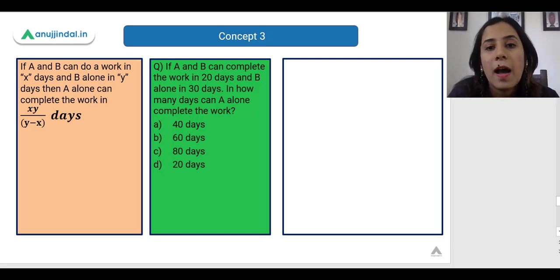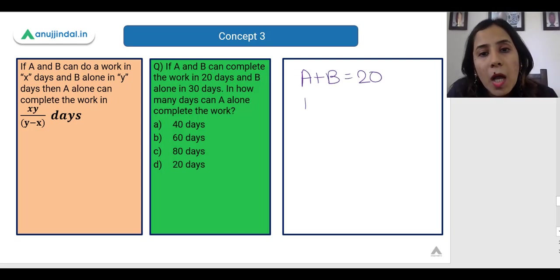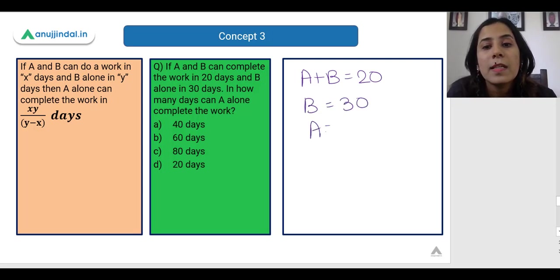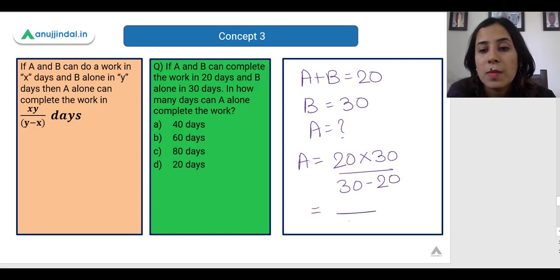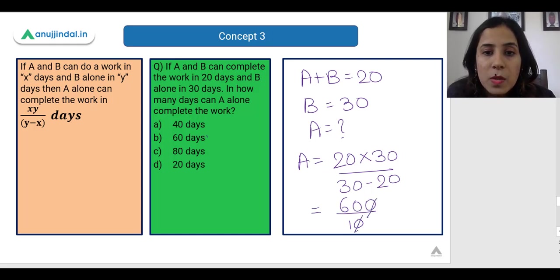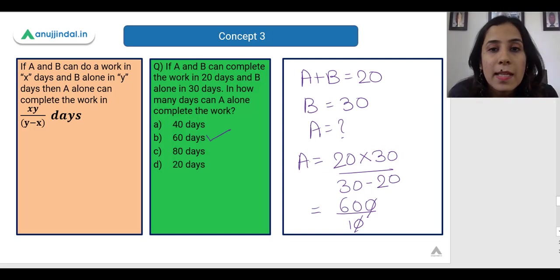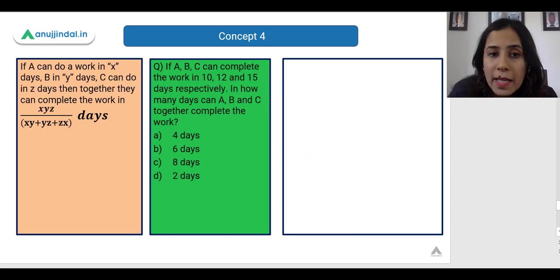In this example, A and B together can do the work in 20 days, and B alone can do it in 30 days. We substitute into the formula: A = (20 × 30) / (30 − 20) = 600 / 10 = 60 days. So A takes 60 days to complete the work alone.